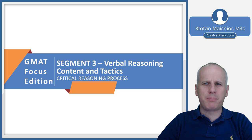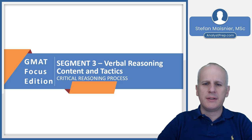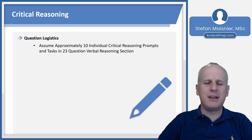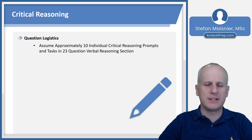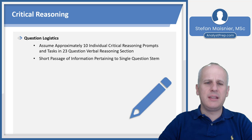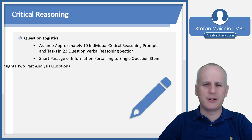In this lesson, we'll cover the basic process for one of the two types of questions you will encounter in the verbal reasoning section of the GMAT Focus Edition, and that's going to be critical reasoning prompts. There are going to be approximately 10 individual critical reasoning prompts and tasks in your 23-question verbal reasoning section, so this is a little less than half of the section. You'll generally experience more reading comprehension, but each of these are going to be self-contained little passages of information pertaining to a single question stem.